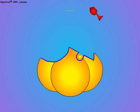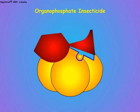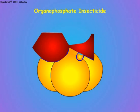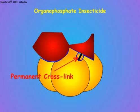Both organophosphate and carbamate insecticides mimic the structure of acetylcholine and fit into the active site of the acetylcholinesterase. Here we see how a representative organophosphate interacts with acetylcholinesterase — like natural acetylcholine, the organophosphate molecule fits into the active site.